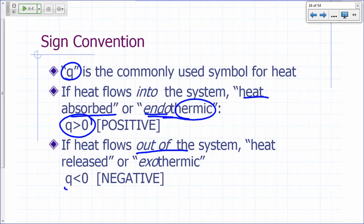If heat flows out of your system, we assign a negative value for Q. If heat flows out of your system, the energy of your system is dropping, so we assign a negative value for Q.